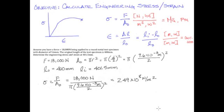Since 1 megapascal is equal to 1 times 10 to the 6th newtons per meter squared, then our resulting value can also be reported as 249 megapascals.